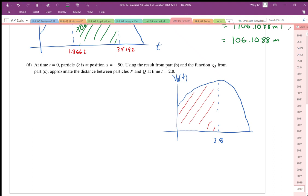Part D of question number 2 says, at t equals 0, the particle Q is at a position of negative 90. So that's important to note that we have our initial condition here, and we can start our integral off. So we want to know the position of particle Q, and we can then compare that to the distance that we found in part B.